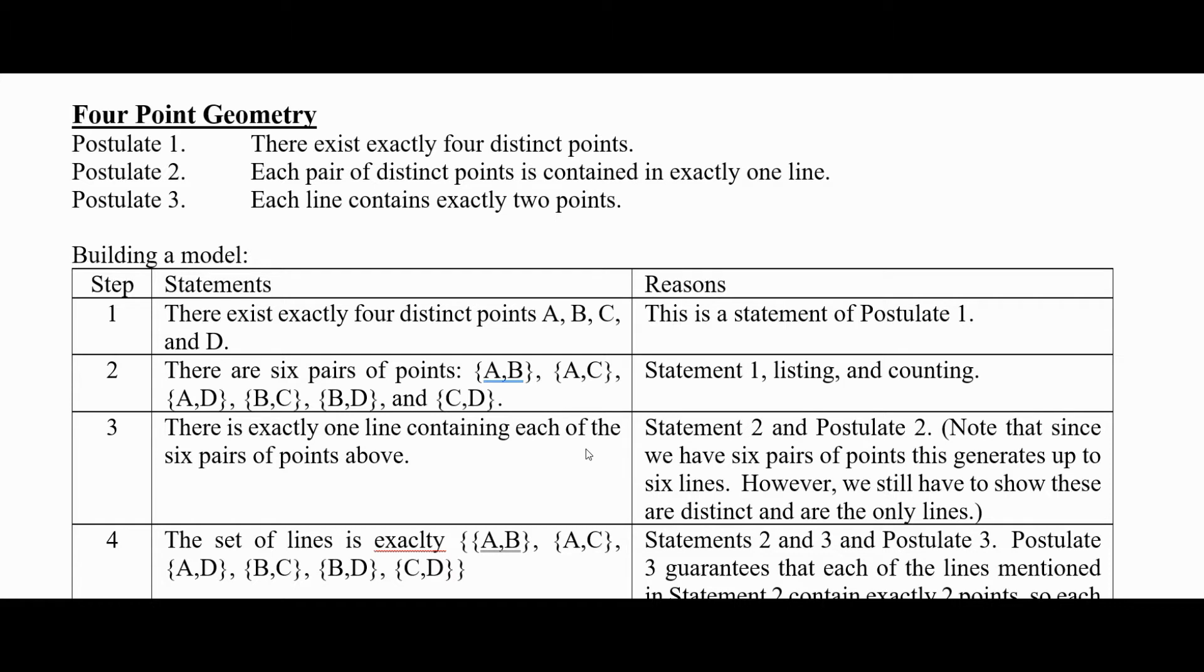There's exactly one line containing each of the six pairs of points from statement 2. The reason for that is statement 2 and postulate 2. Notice that since we have six pairs of points this generates up to six lines. However, we will still have to show that these are distinct and these are the only lines.